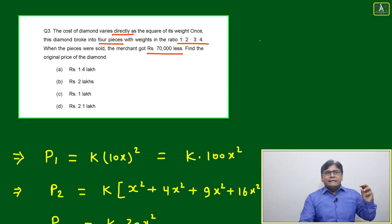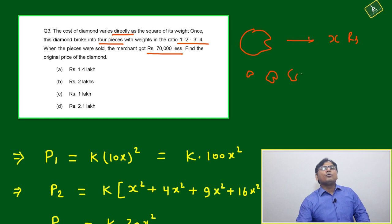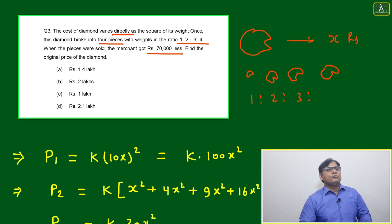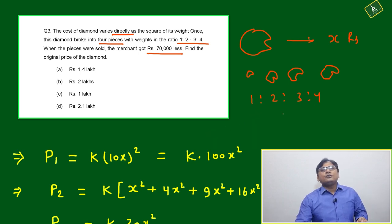Suppose this is your diamond. If he was selling it, he was getting x rupees. What happened? It has broken into four pieces by mistake. That ratio is 1:2:3:4, the weight ratio is 1:2:3:4.